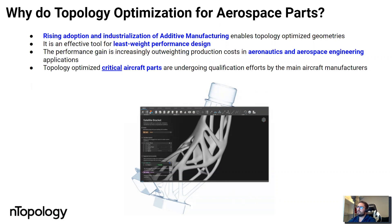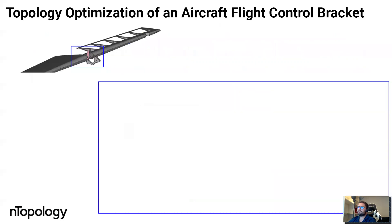Topology-optimized critical aircraft parts are undergoing qualification efforts nowadays by the main aircraft manufacturers, who are attempting not just unimportant parts but actually parts that are functional and important to aircraft safety.